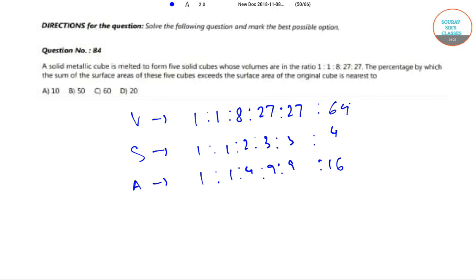We get this. So the sum of the areas of 5 smaller cubes is 24 parts. This is 24, while that of the big cube is 16. So the sum is 50% greater. Option B.